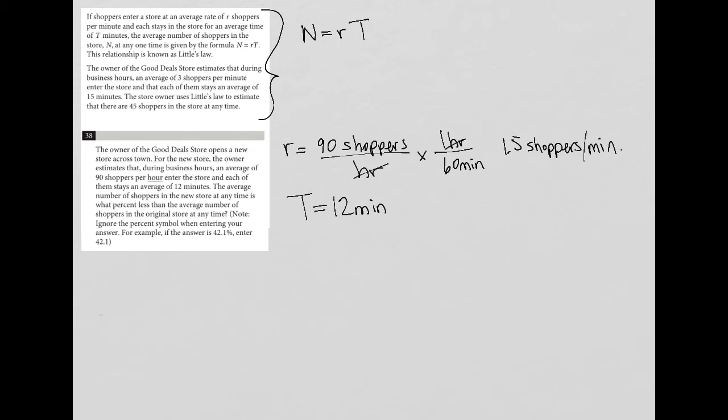The average number of shoppers in the new store at any time, that'd be N equals R, which is 1.5 times T, which is 12. 1.5 times 12 is, sorry about that, mistyped it in my calculator. N is equal to 18. So 18 for this new store.